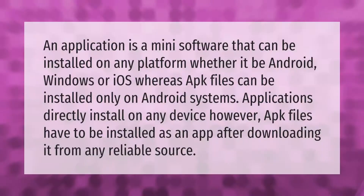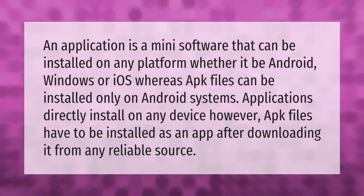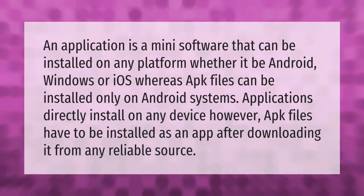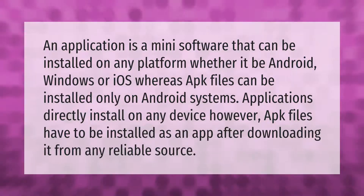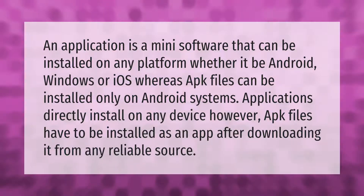An application is a mini software that can be installed on any platform, whether it be Android, Windows, or iOS, whereas APK files can be installed only on Android systems. Applications directly install on any device; however, APK files have to be installed as an app after downloading from a reliable source.